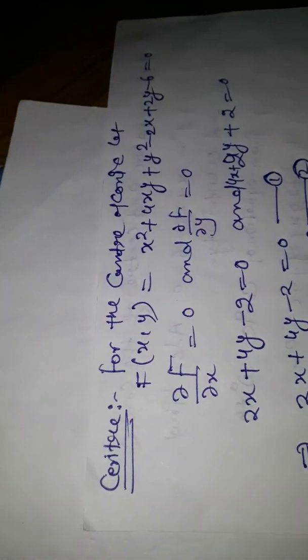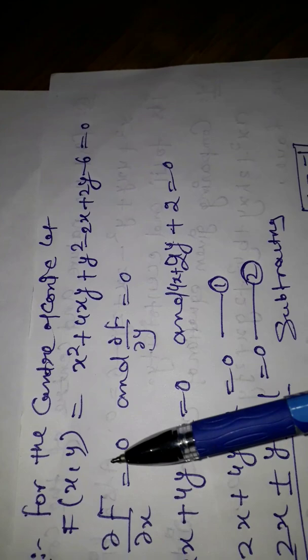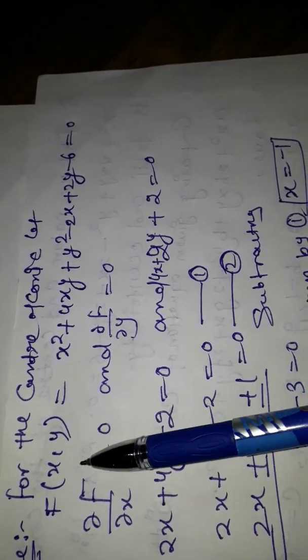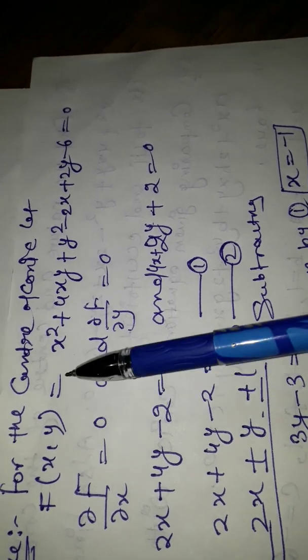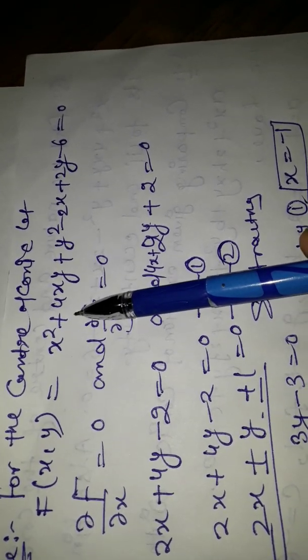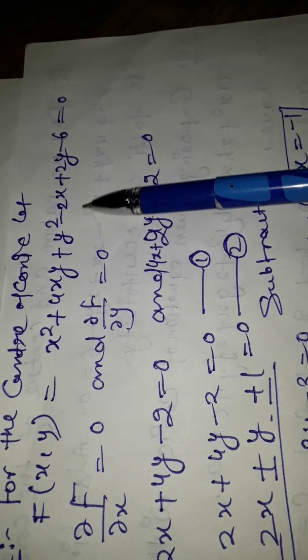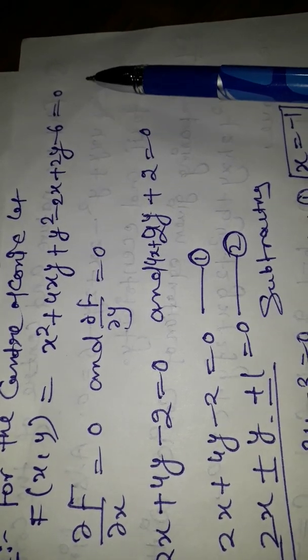To find the center of the conic, we write this equation as f(x,y) = x² + 4xy + y² - 2x + 2y - 6 = 0.